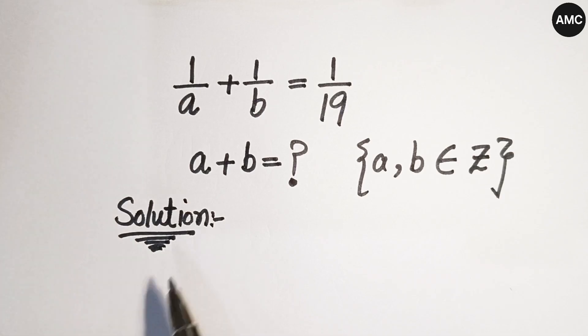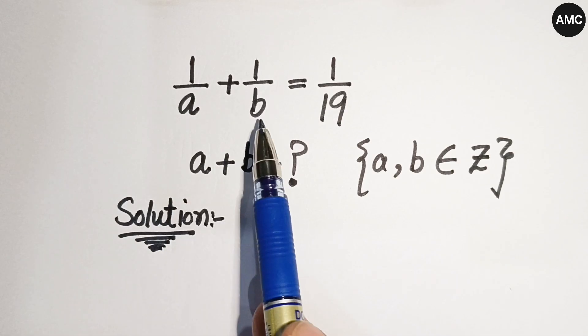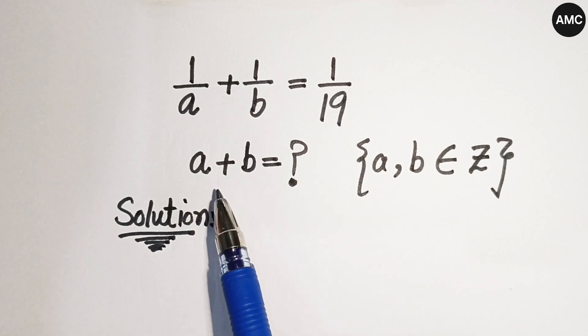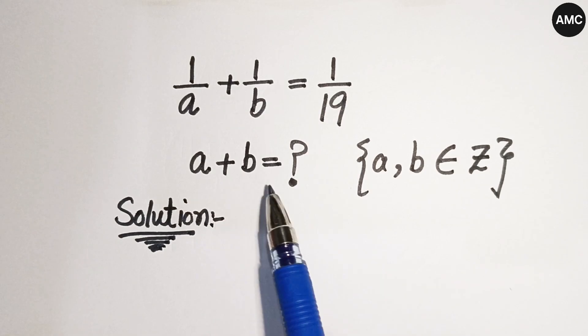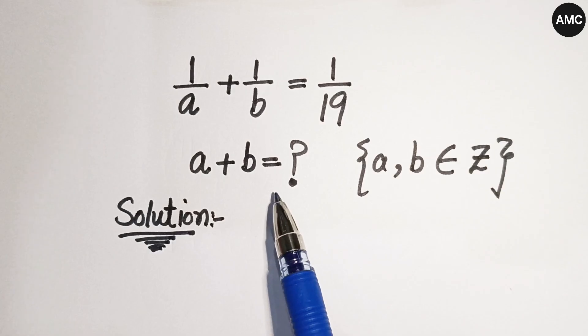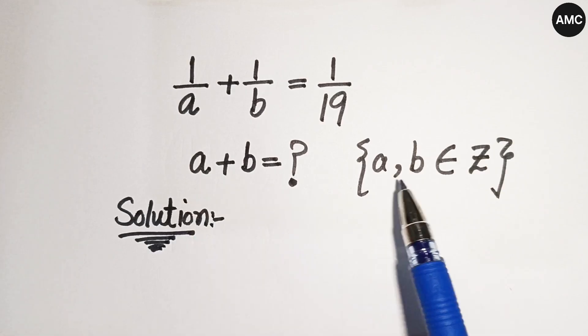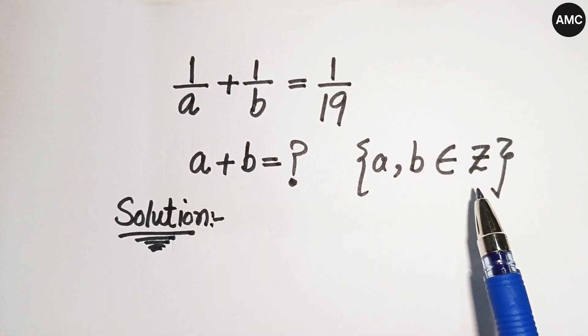Here, 1 over a plus 1 over b is equal to 1 over 19. We have to find the value of a plus b. Remember that a and b belong to the integers.